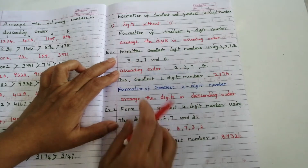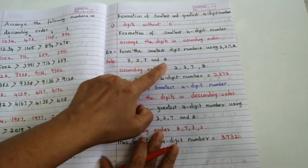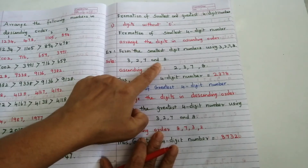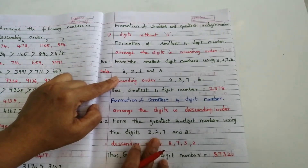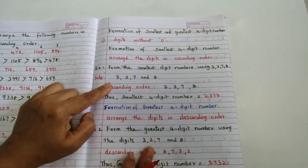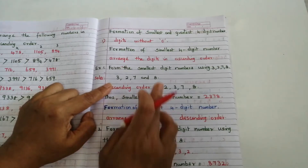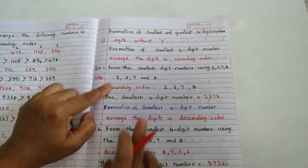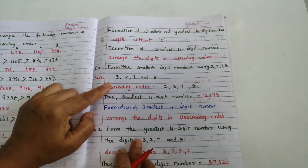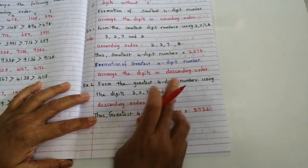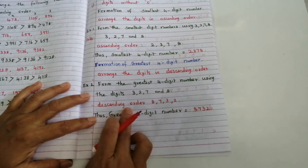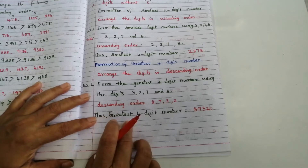For example, given digits: 2, 7, and 8 — these digits have no zero. In that case, we arrange the given digits in ascending order to get the smallest four-digit number, and in descending order to get the greatest four-digit number.